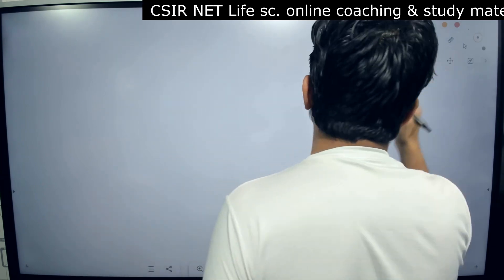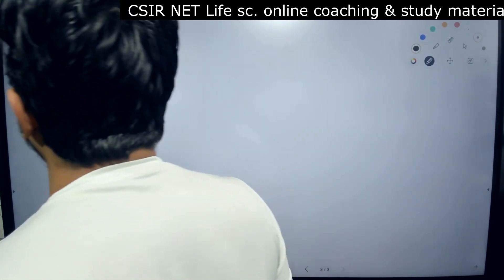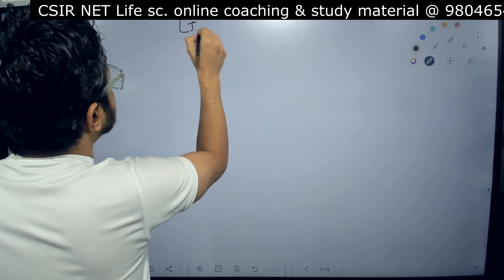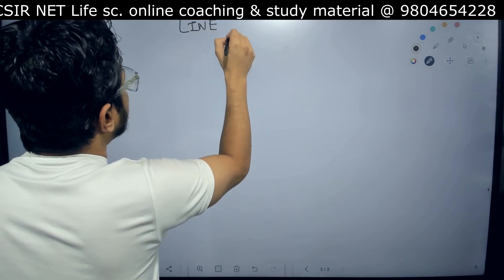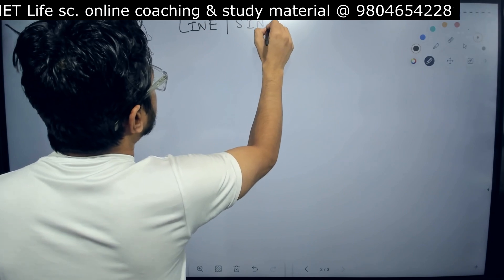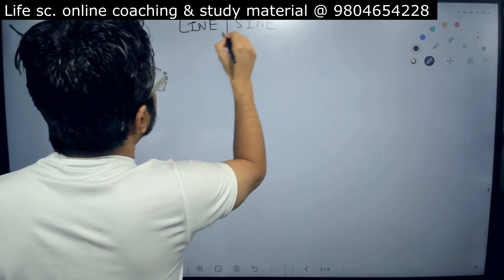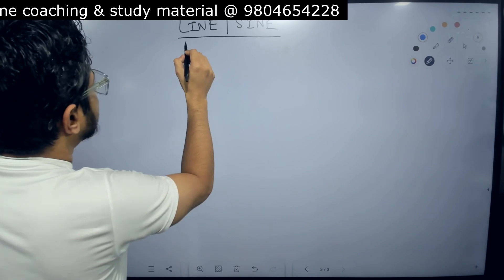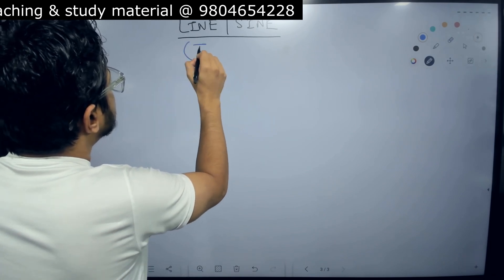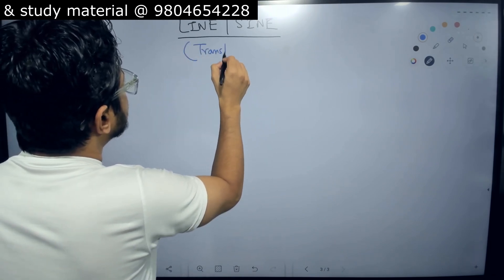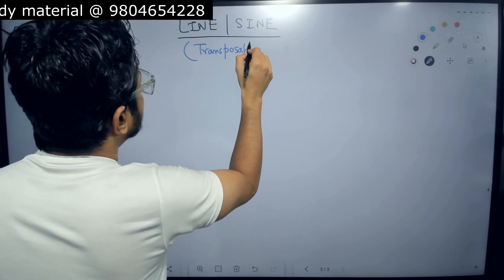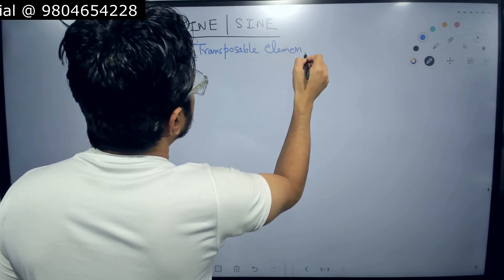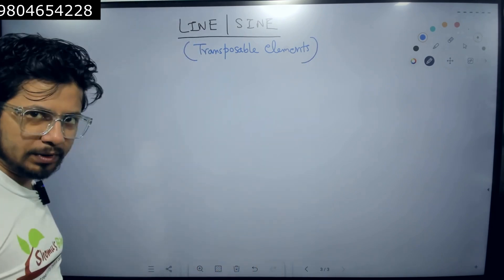In very simple terms, this is about eukaryotic genomic understanding. When we write the terms LINE and SINE, what are they? In very simple words, what we can say is that these are all transposable elements.